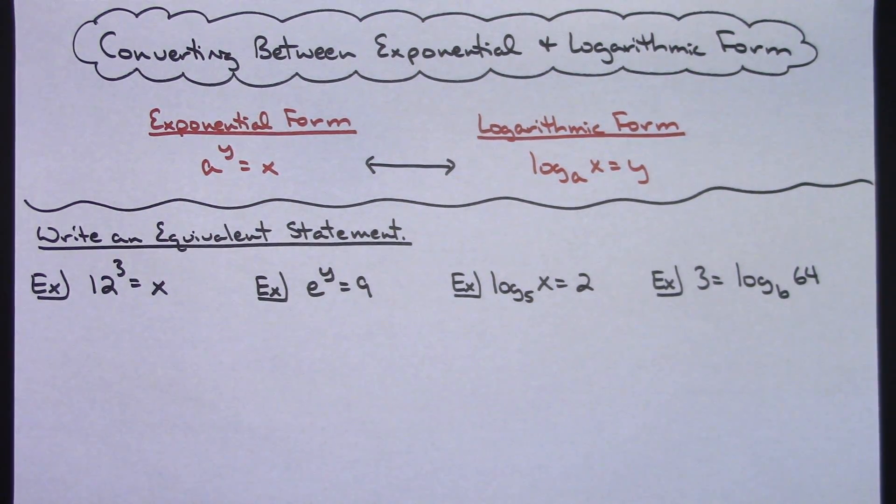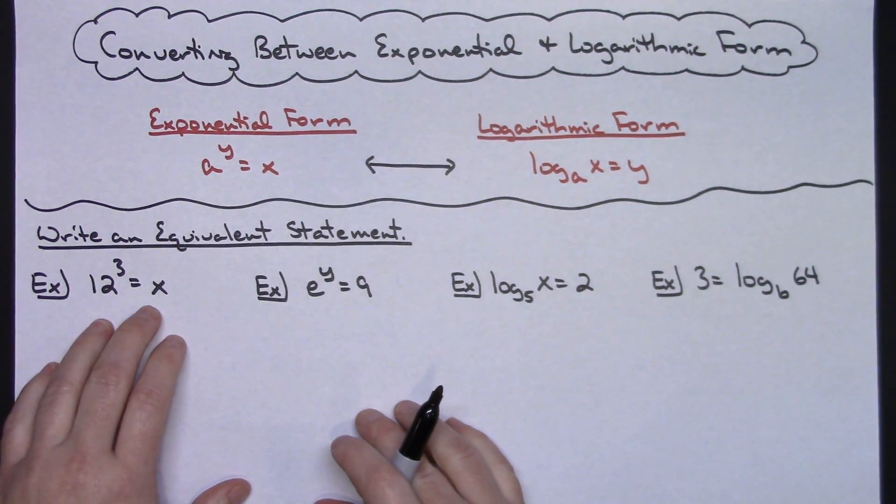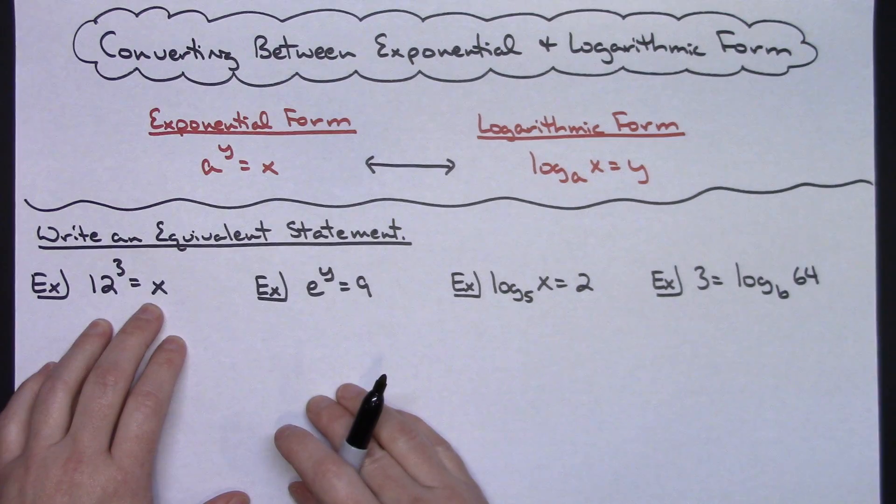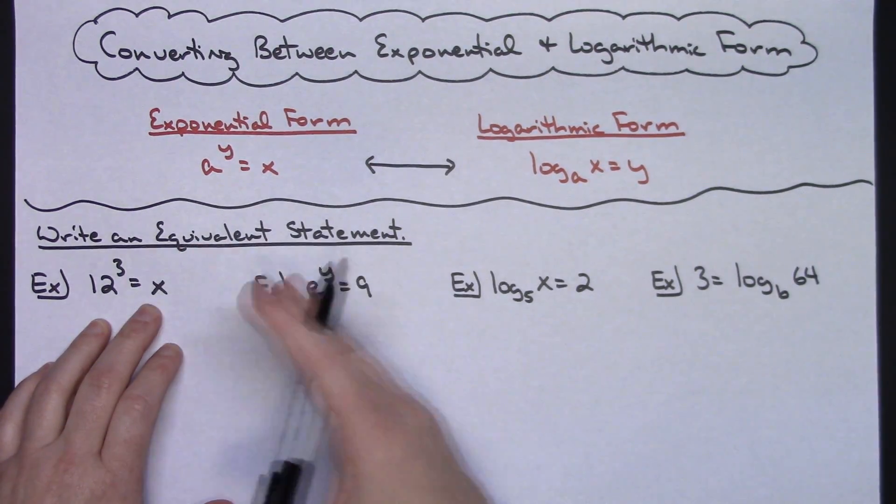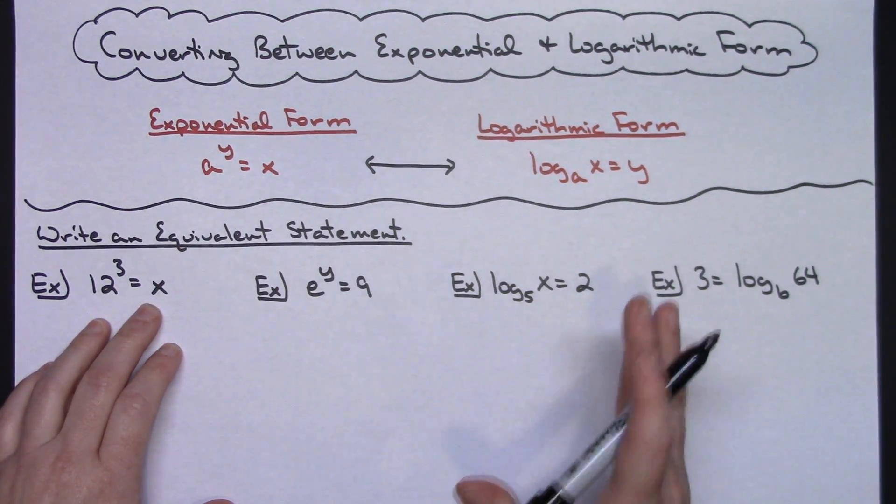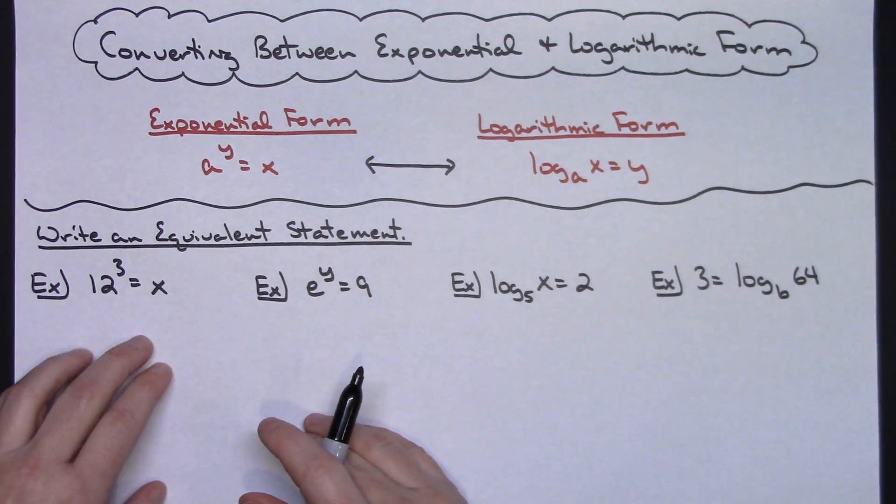We're going to do four quick examples showing you how you would go back and forth between the two. Directions here just say write an equivalent statement. So if you've got exponential form, we'll be writing the logarithmic form. If you have logarithmic form, we will then be writing the exponential form.